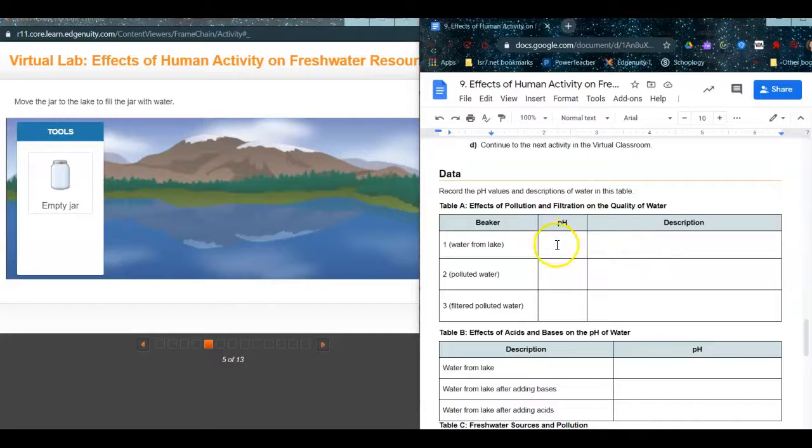So then you'll go down here to table A and write down the pH, and then you'll write down what the description is. So I'll just do that as an example.